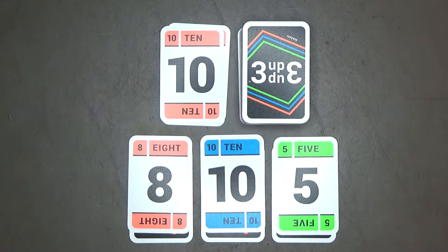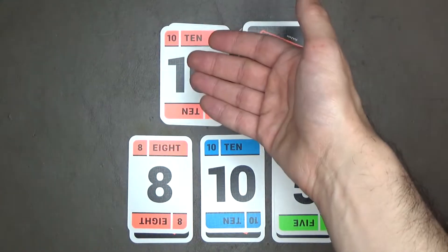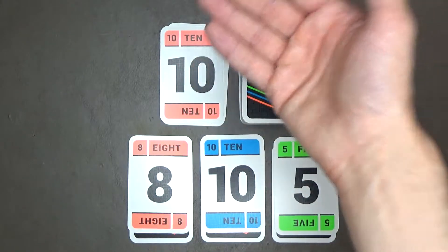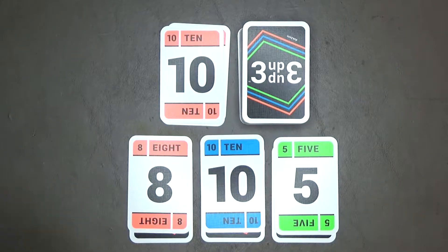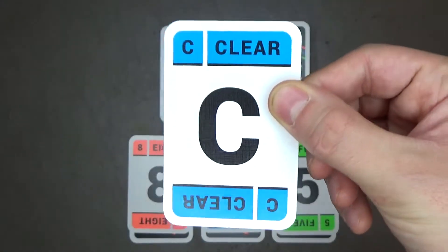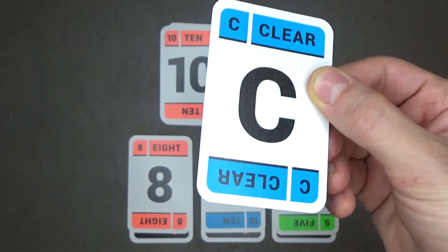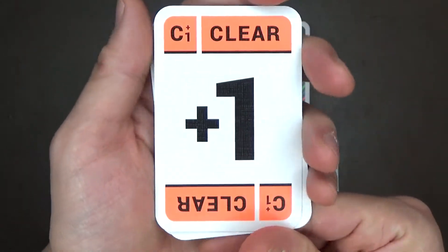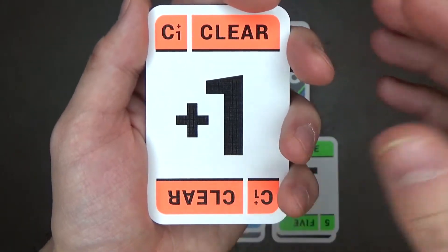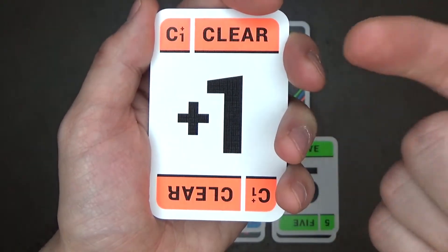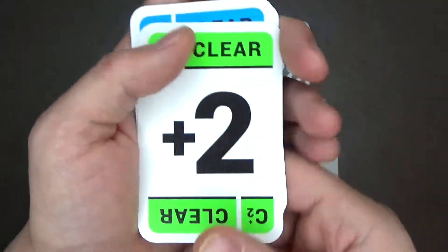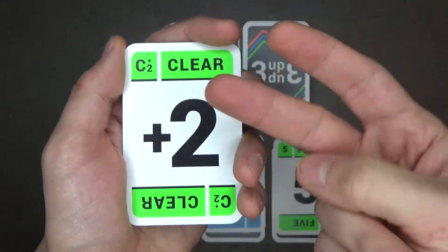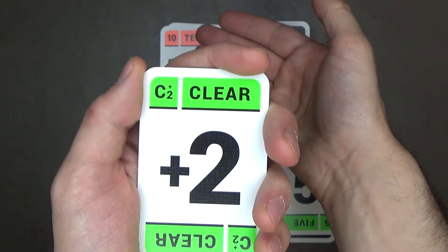Now let's go over the clear cards. Whenever a clear card is played on top of the discard pile, take all the cards from the discard pile including the clear card that was played and remove them from the game. There are 3 different kinds. This one is a basic clear card. It does exactly what I just said a second ago. This is a clear plus 1 card. It does the same as a basic clear card except that you take an extra turn after clearing the discard pile. And this clear plus 2 card gives you 2 extra turns after clearing the discard pile.